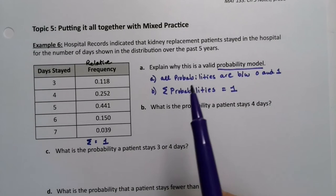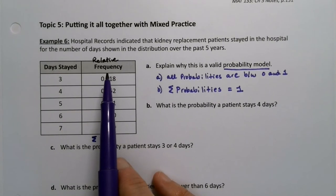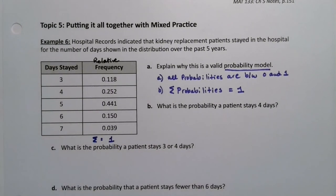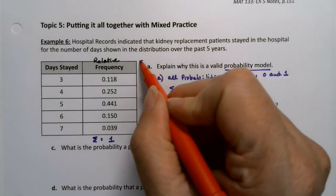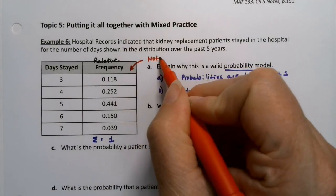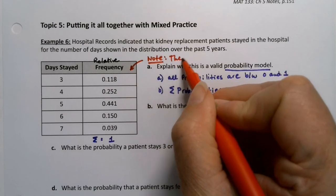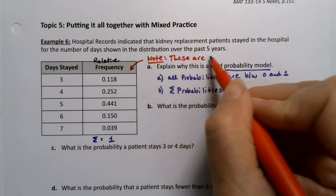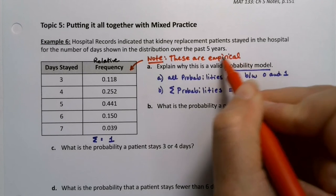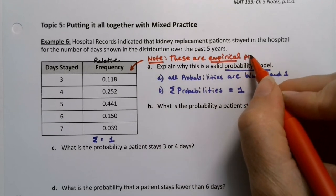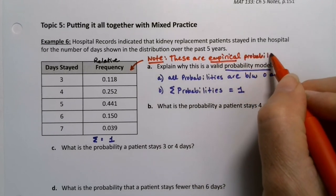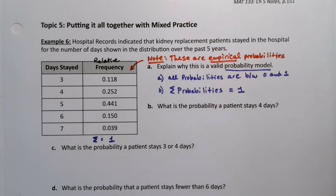If you're worried about this being relative frequency rather than probability, remember they're one and the same for empirical probabilities. Which would be worth noting. These are empirical probabilities because they're from data, or in this case, a statistics textbook for nursing.